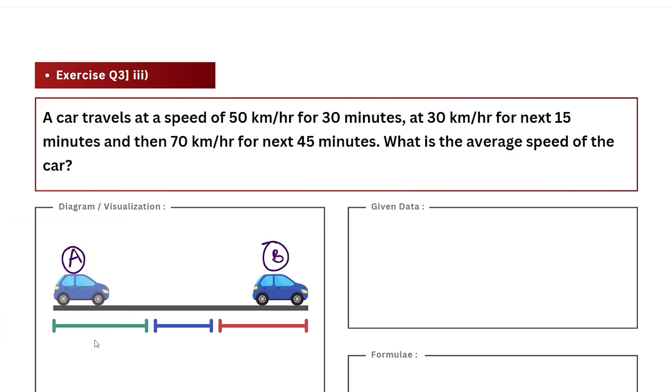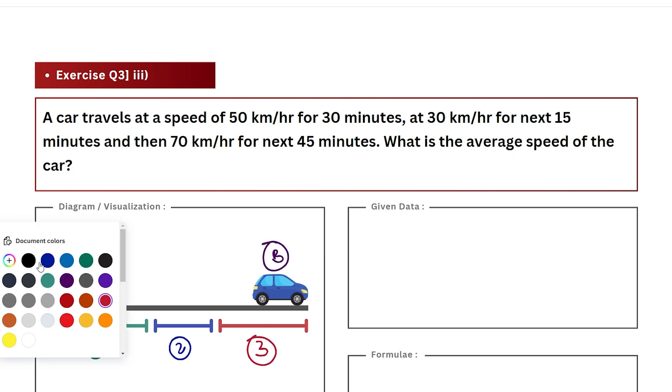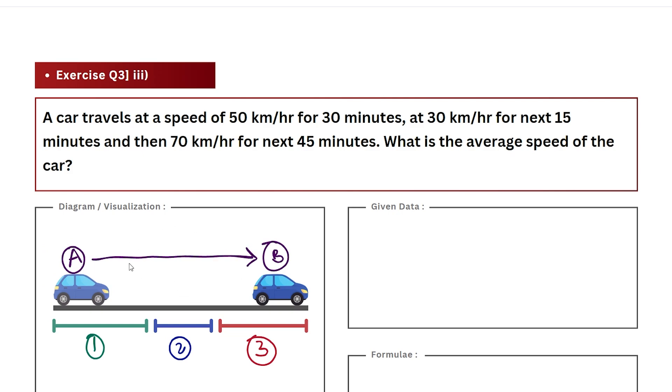So we have three parts of journey and for each of these parts the car travels at a different speed for a different amount of time and all these values have been given to us in our question. But effectively if we see, the car is traveling from location A to B, so while doing this journey the car must have some average speed and that is what we are supposed to find in this question.